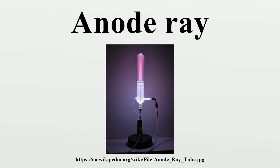An anode ray ion source typically is an anode coated with the halide salt of an alkali or alkaline earth metal. Application of a sufficiently high electrical potential creates alkali or alkaline earth ions, and their emission is most brightly visible at the anode.